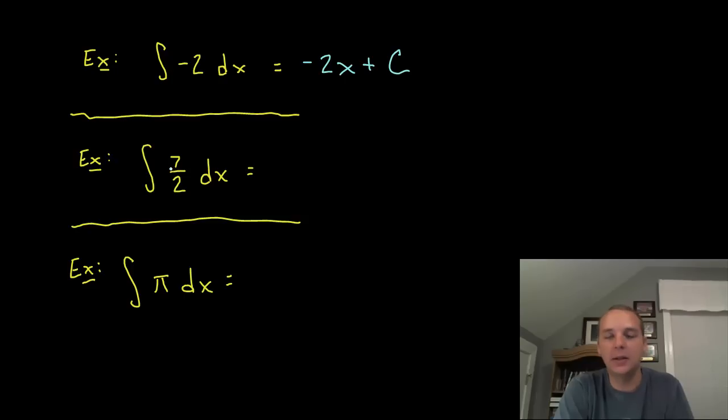7 halves is a fraction, but that doesn't matter, we just say 7 halves x plus c. And the integral of pi, pi is 3.14159 and continues on forever, it would simply be pi x plus c.